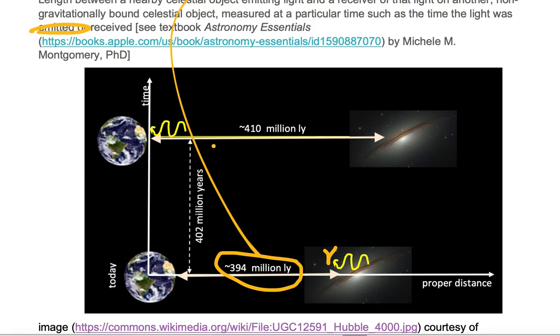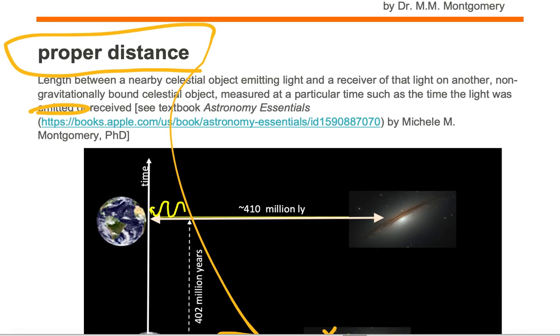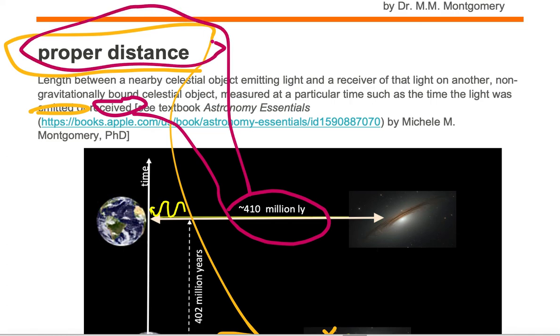Therefore, the proper distance at the time the light was received is 410 million light years. This 410 million light years is another example of proper distance, or the length between two celestial objects, one of them emitting the light and the other one receiving the light.